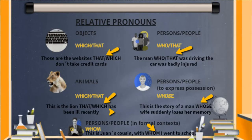If you refer to objects, you use which or that. For example: those are the websites that, or which, don't take credit cards. For animals, we also use which or that. For example: this is the lion which, or that, has been ill recently.